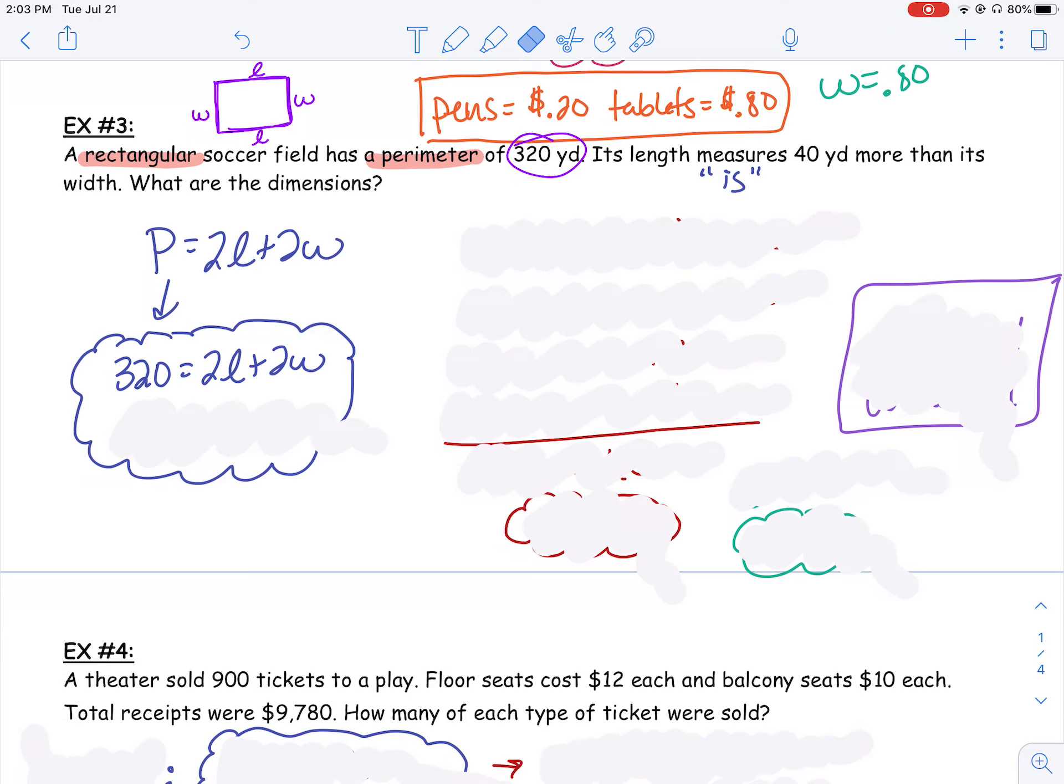So now that I have this system of equations, you can use either method, whatever you prefer. However, I'm probably going to use substitution on this one, since this equation is already solved for l. I'm going to take that, I'm going to substitute it into my first equation, and give me my new equation of 320 equals 2 times w plus 40 plus 2w. I substituted in the w plus 40 in for my l.